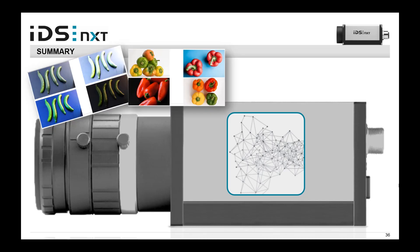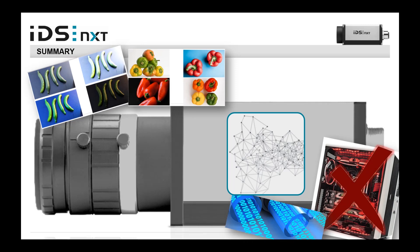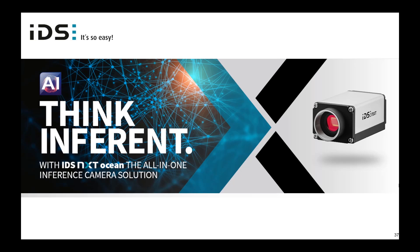To summarize: with AI, you can simplify detection tasks or make them possible for the first time — think about bell peppers, which are very hard to handle with rule-based machine vision. Running AI on a camera reduces the need for an extra PC in many cases, which means reduced costs and a simplified setup. Thanks for watching — I hope this gave you an idea of how to solve your challenges using deep learning on edge-based systems like our IDS NXT cameras. If you have further questions, don't hesitate to contact IDS. Have a nice day.